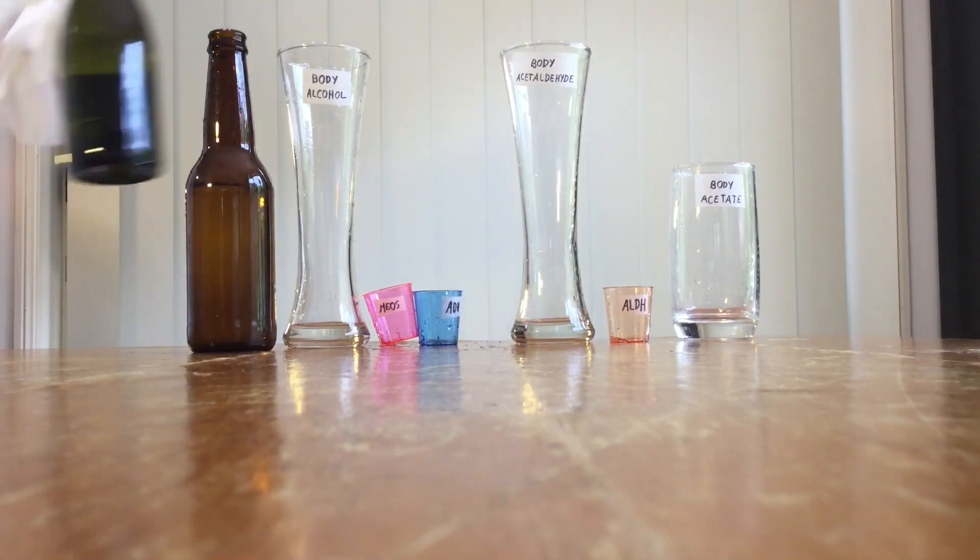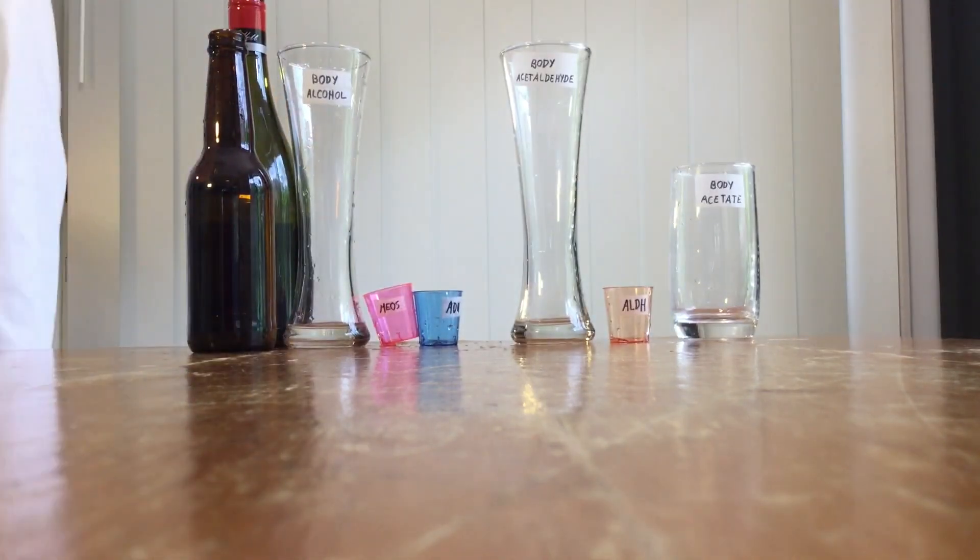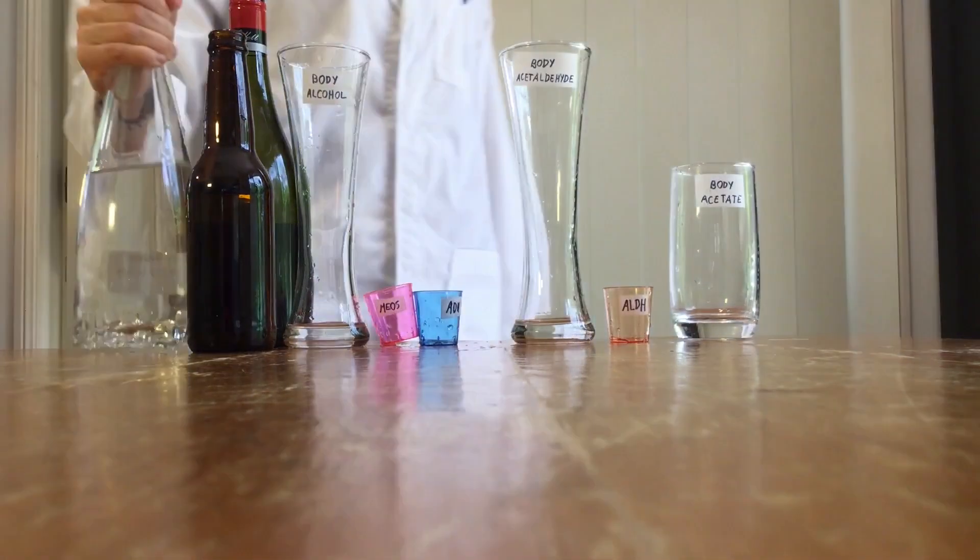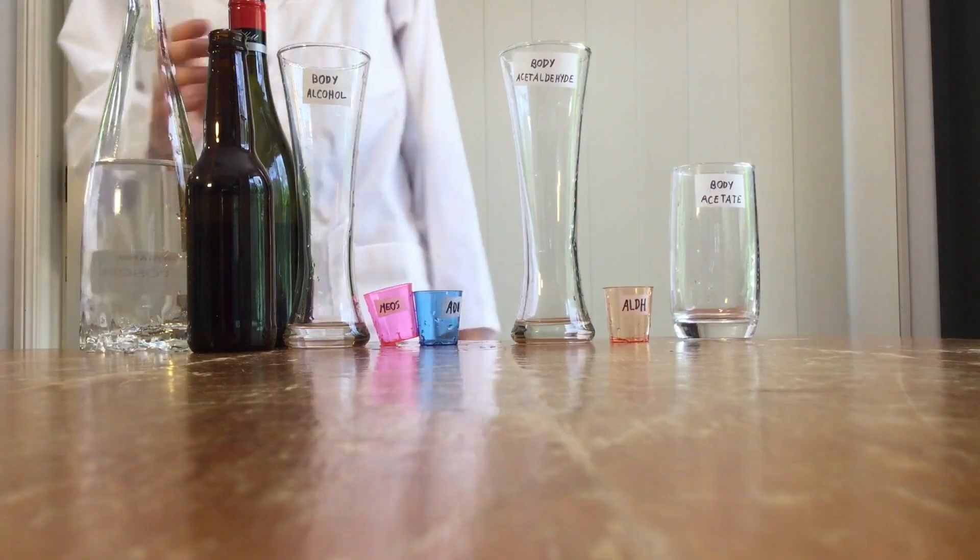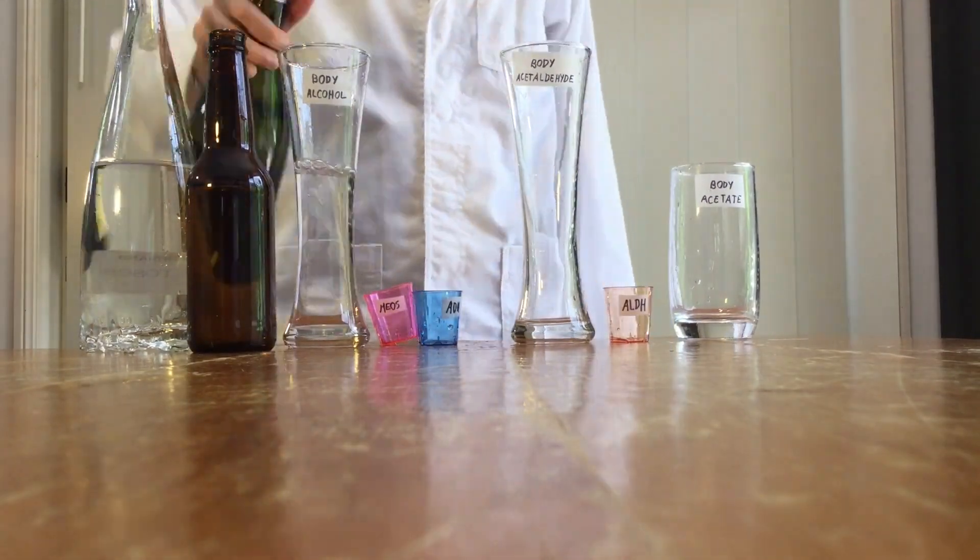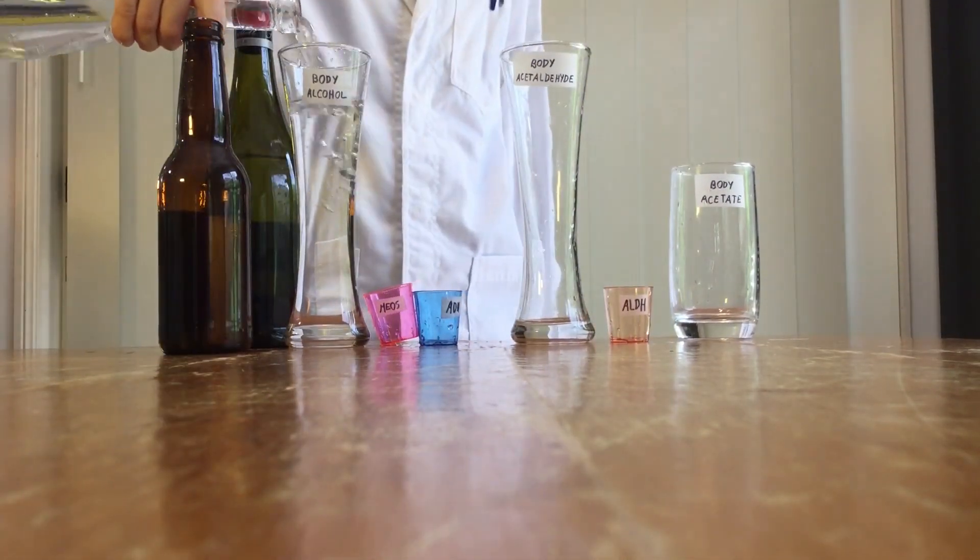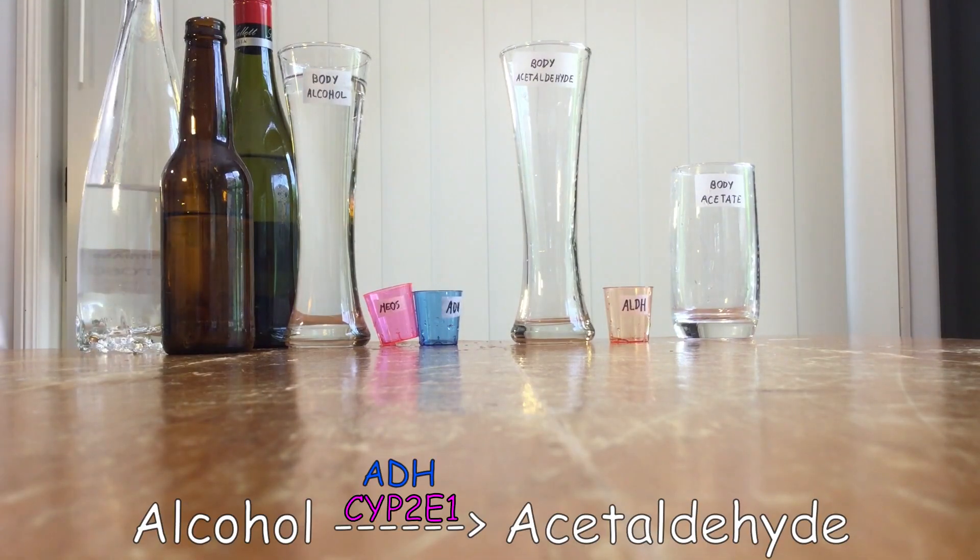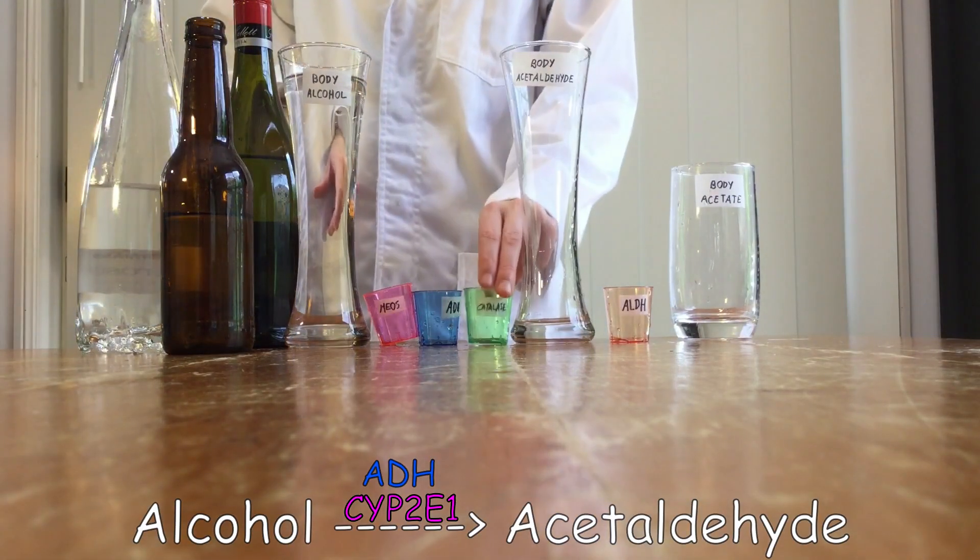Now you've gone all out - you've had a bottle of wine, a couple of bottles of beer, and half a bottle of vodka. The alcohol in the body is going to be extremely high, and the body is going to pull out all stops to get rid of it. It uses the ADH pathway, the MEOS pathway, and this time the catalase pathway.